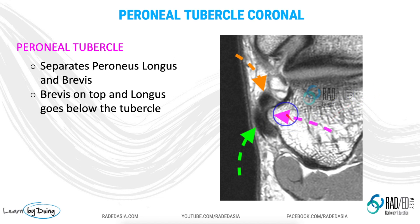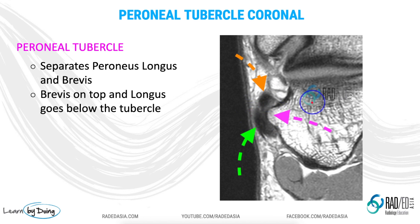The importance of this tubercle becomes apparent if it's enlarged, as the peroneus longus and brevis tendons move against it and can result in tendinosis, tenosynovitis, or tearing of these tendons. So an enlarged perineal tubercle is important to recognize and describe on MRI.